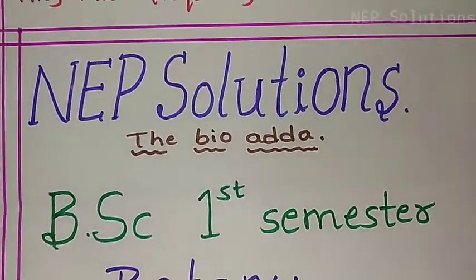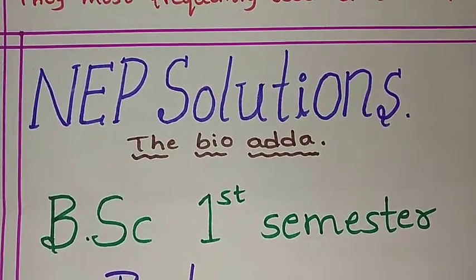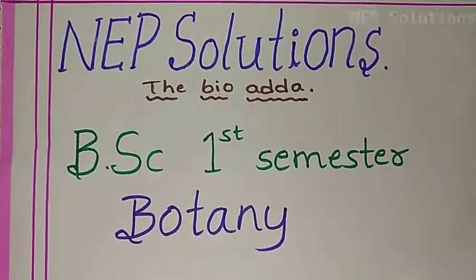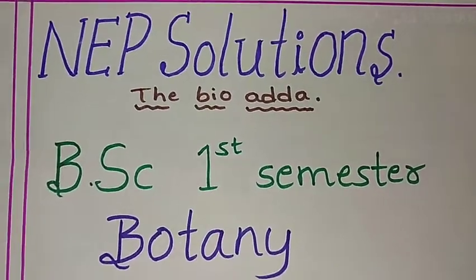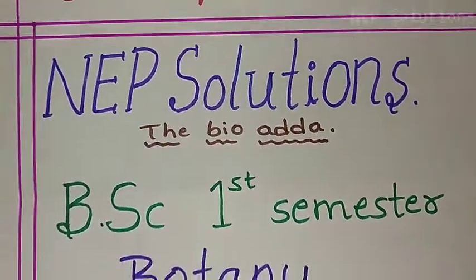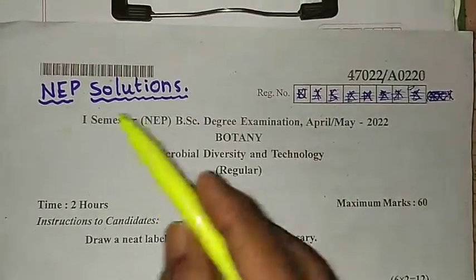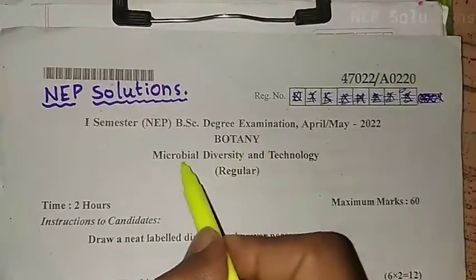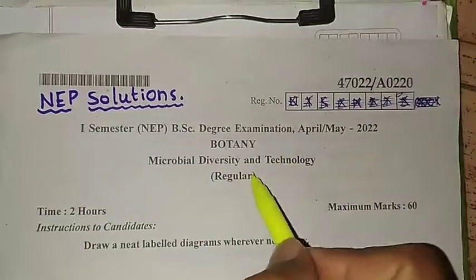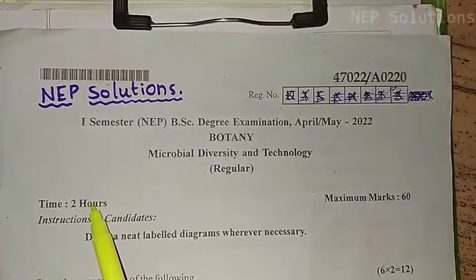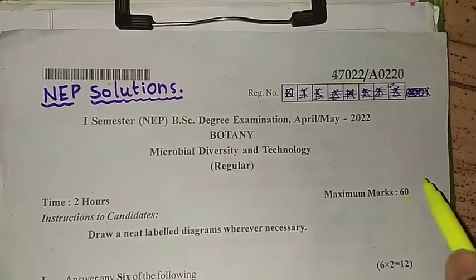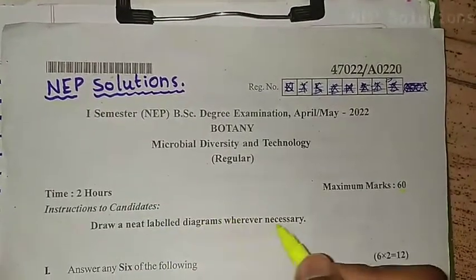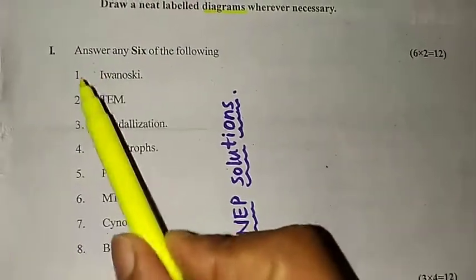Hello friends, welcome to NEP Solutions, the Bio Adda. In this video we are solving the BSE first semester botany question paper. The paper is from the BSE degree examination April/May 2022, Botany: Microbial Diversity and Technology. The exam duration is two hours, maximum marks is 60. One important instruction: draw neat labelled diagrams wherever necessary.